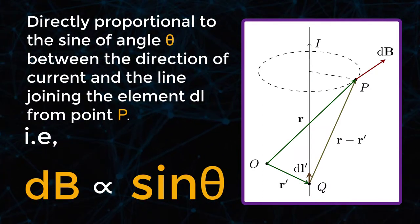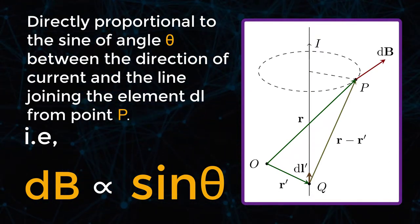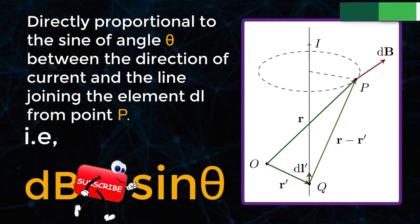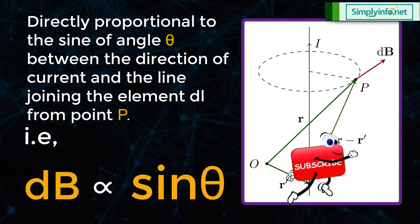Directly proportional to the sine of angle theta between the direction of current and the line joining the element dl from the point P, that is dB directly proportional to sine theta.